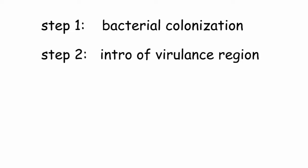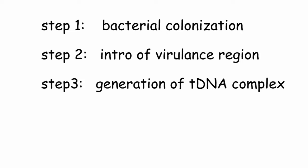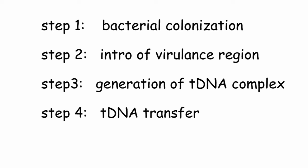The mechanism of T-DNA transfer in plant cells involves five steps: Step 1 is bacterial colonization, Step 2 is introduction of the virulence region, Step 3 is generation of the T-DNA complex, Step 4 is T-DNA transfer, and Step 5 is T-DNA integration.